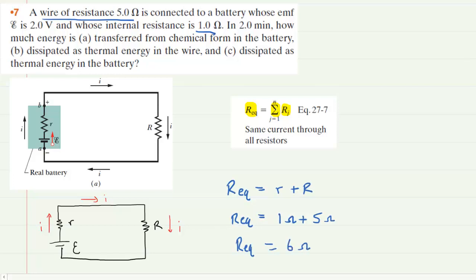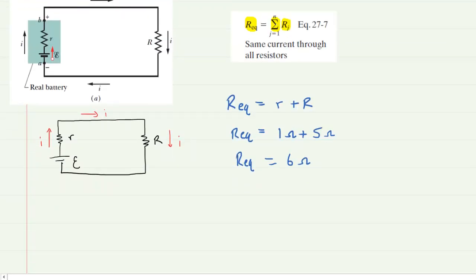Now we're going to be using that value to determine the total current that is traveling through the circuit. And we have to understand that the total current is given to us by Ohm's Law. We know that the EMF delivered by the battery would equal the total current multiplied by this equivalent resistance.